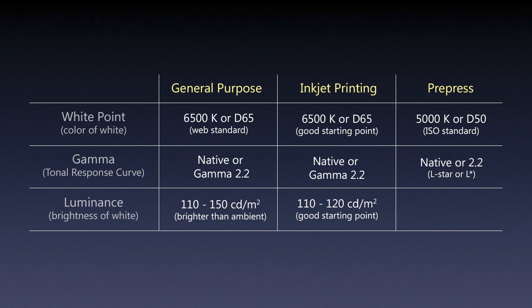As far as gamma for pre-press, I would go native or 2.2 — that's your best bet. However, if you're working with the ECI profile, which has its own tone response curve called L-star, and you're preparing work to be printed in a pre-press environment, then calibrating your monitor to L-star makes more sense. We'll talk about that more later when we get to actual profiles.